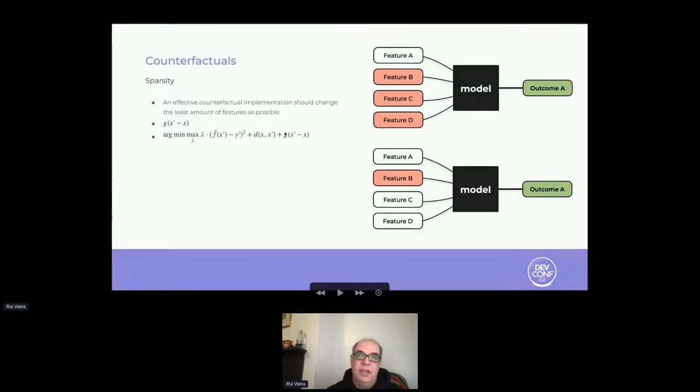The next property is sparsity. Sparsity states that counterfactuals which change the minimum amount of features are preferred. We can see this from an explainability lens because if we have a model with a huge number of inputs, it is easier to interpret the counterfactual if it only changes a few inputs rather than changing a lot of them. Formally, we can define this as adding a penalty term to each term changed and including it in our minimization function in addition to the distances we had previously.